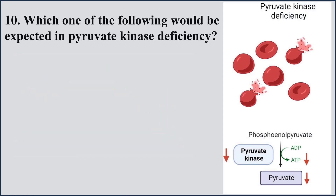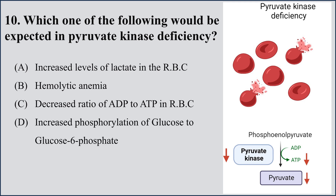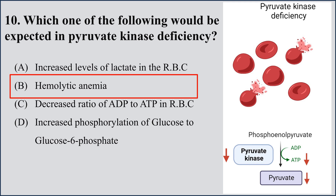Question number 10: Which of the following would be expected in pyruvate kinase deficiency? A) increased level of lactate in RBCs, B) megaloblastic anemia, C) decreased ratio of ATP to ADP, D) increased phosphorylation of glucose to glucose-6-phosphate. In pyruvate kinase deficiency, what happens to RBCs if the glycolytic pathway is affected — it will lead to hemolytic anemia.